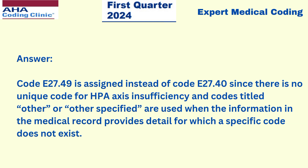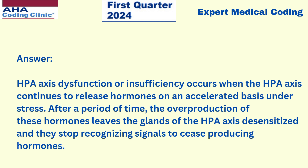Code E27.49 is assigned instead of E27.40 since there is no unique code for HPA axis insufficiency, and codes titled 'other' or 'unspecified' are used when the information in the medical record provides detail for which a specific code does not exist. HPA axis dysfunction or insufficiency occurs when the HPA axis continues to release hormones on an accelerated basis under stress. After a period of time, the overproduction of these hormones leaves the glands of the HPA axis desensitized and they stop recognizing signals to cease producing hormones.